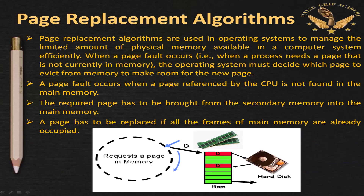For example, considering this diagram: a particular page is requested by the processor, which checks the RAM. Say page D is requested — it checks whether D is available in RAM. If not, a request is sent to the hard disk. The hard disk grants that page, and RAM creates room to allocate it. Since the page address is in RAM, it becomes a faster process. For this purpose we use page replacement algorithms.